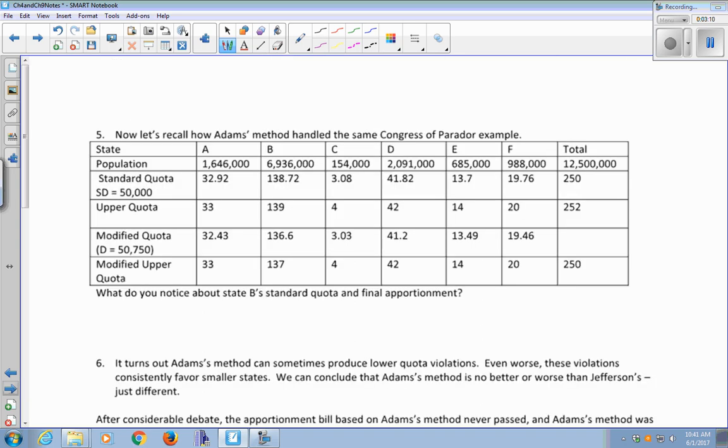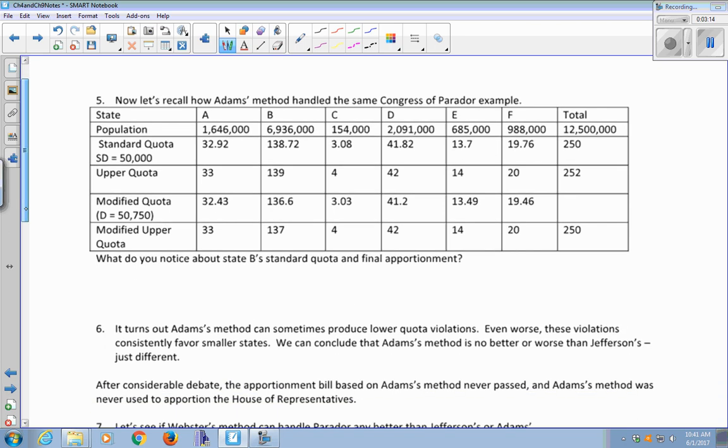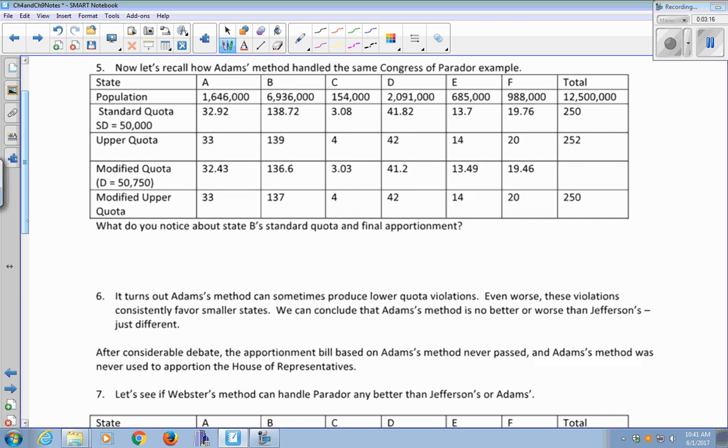So let's look at Adams' method. How does Adams' method handle this same Congress of Peridore example? Again, let's look at State B. Standard quota versus how many seats they were awarded. So their standard quota is 138.72. And according to the quota rule, the only fair number of seats to give them would be 138 or 139. But we only gave them 137. So this is a lower quota violation.